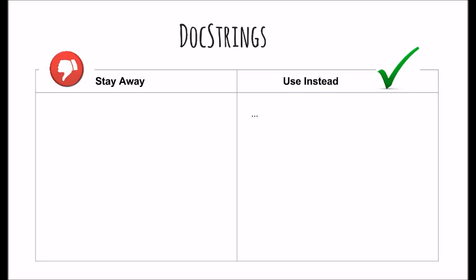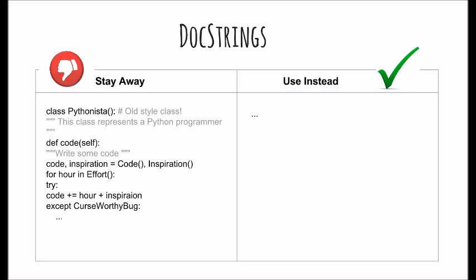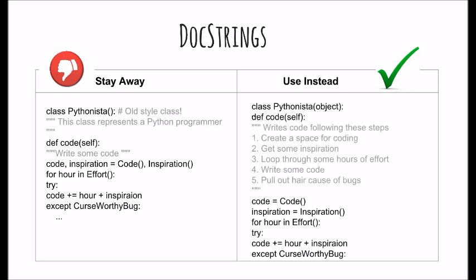Docstrings explain how to use the code and are for the users of the code. The purpose of a docstring is to explain the function even if it seems obvious to you, because it might not be obvious to someone else later on. Describe the parameters expected, the return values, and any exceptions raised. If the method is tightly coupled with a single caller, make some mention of the caller. Lesson number six: comment legitimately.